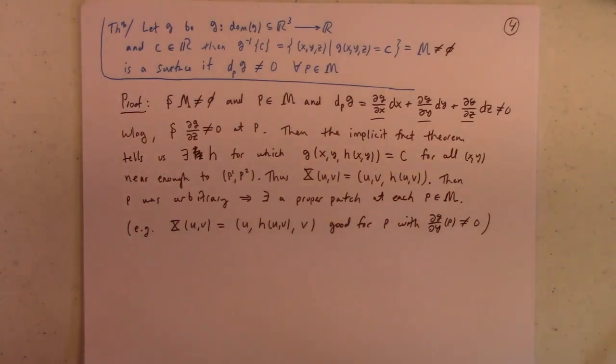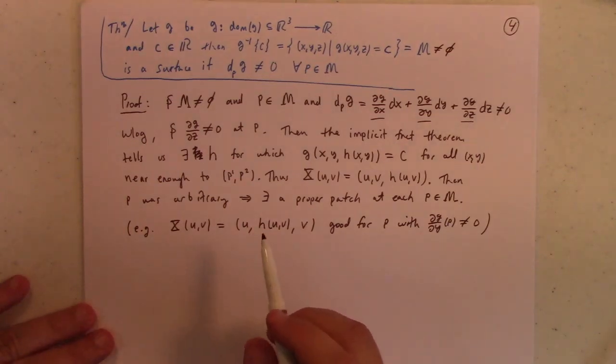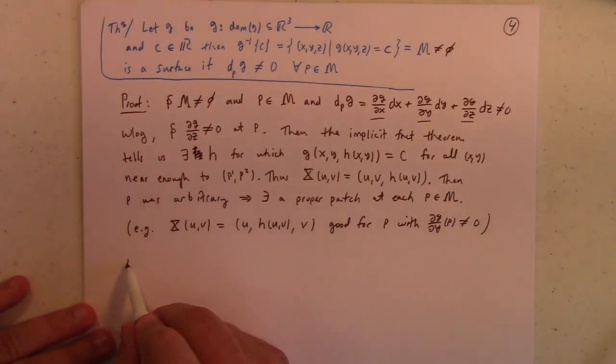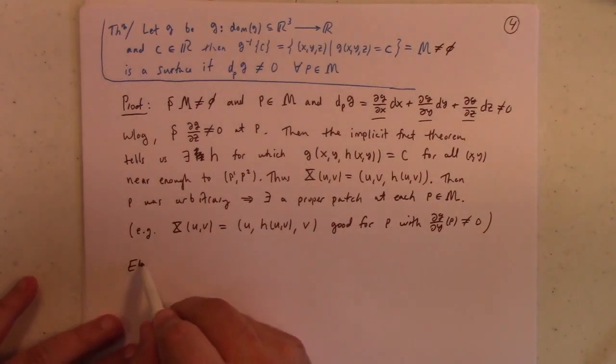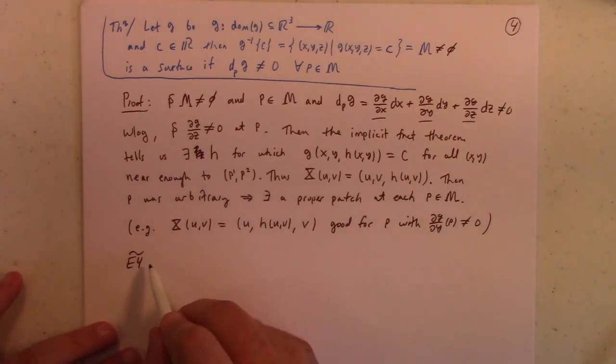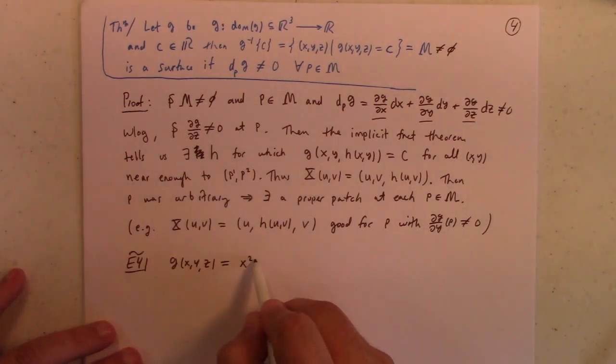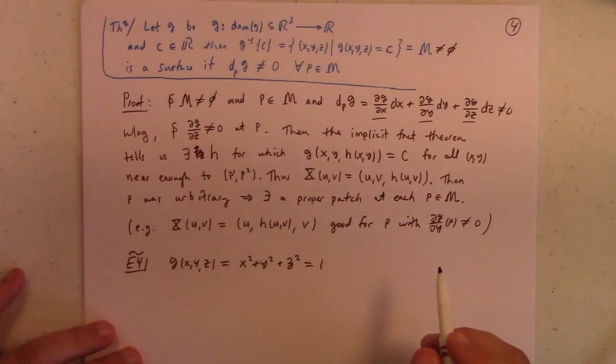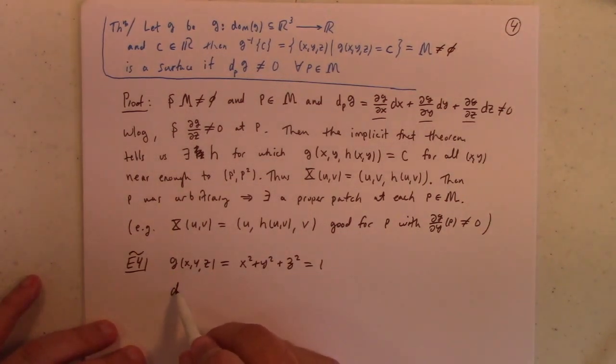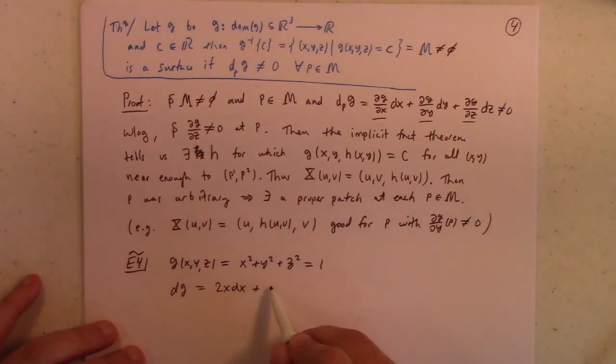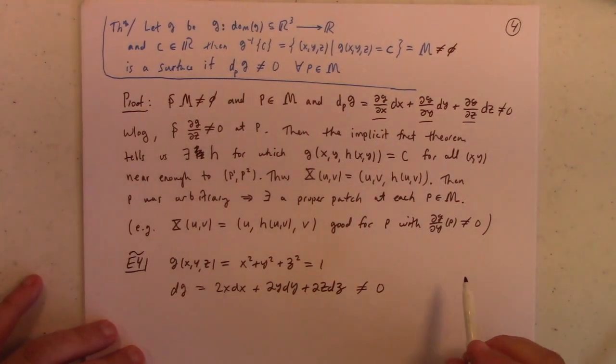Level surfaces are great. You know, we can revisit the sphere example. So, let's see what example, that was example four. Revisited. The sphere would be something like g of x, y, z equal to x squared plus y squared plus z squared equals to one. And so, if you calculate dg, you've got 2x dx plus 2y dy plus 2z dz and as you can see that that's not equal to zero because we never have x, y, and z all zero on the sphere. And that goes to show you that the sphere, in fact, is a surface.